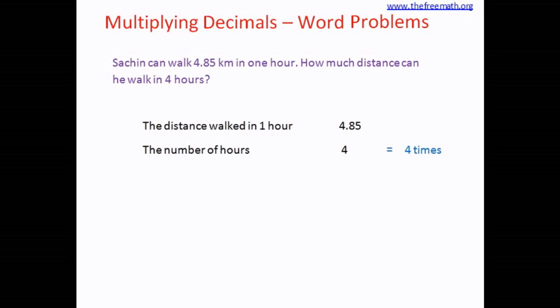Whenever you see the word 'times,' you understand that you have to multiply. So let's do the multiplication: 4.85 multiplied by 4. The first step is to ignore the decimal point and multiply, so let's multiply 485 by 4.